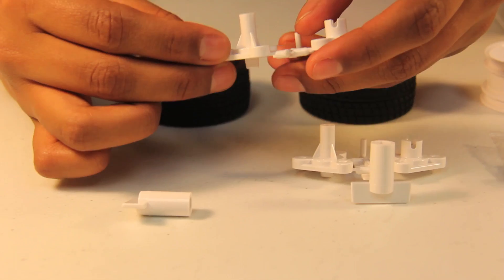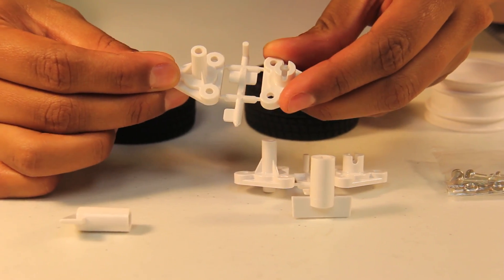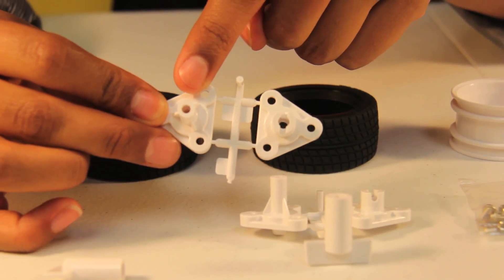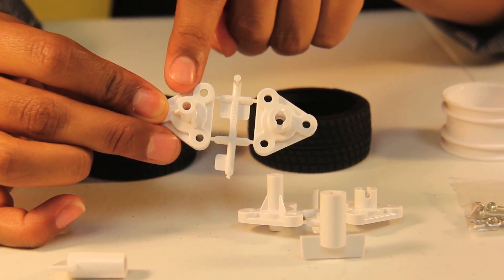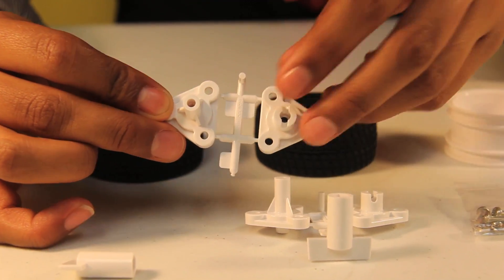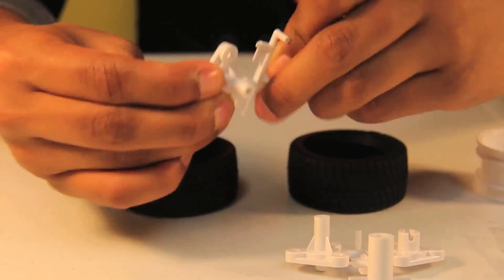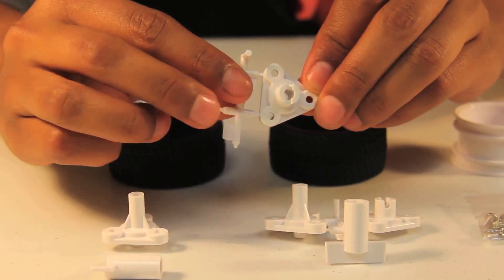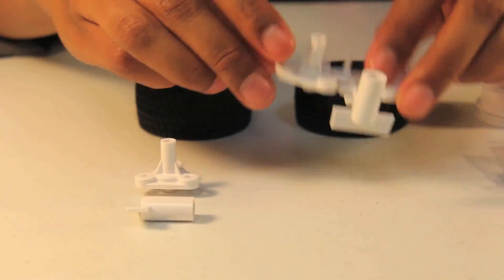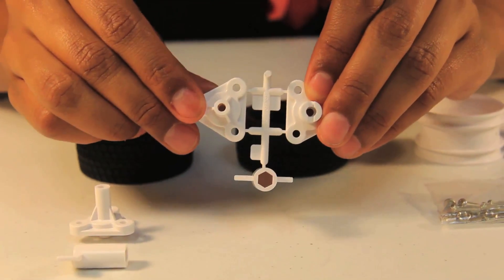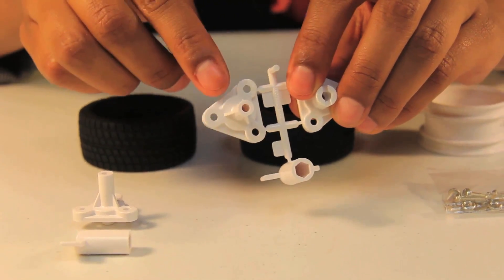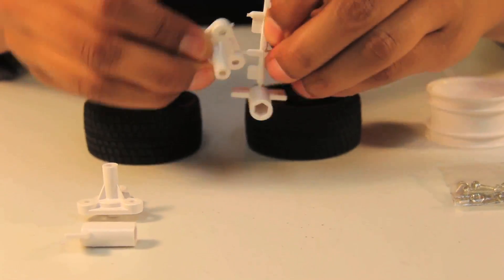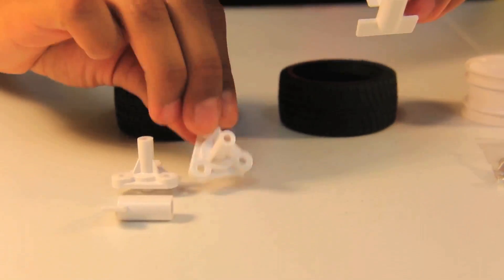We will also be using the wheel hub for the hex shaft. So if you notice, these two wheel hubs look different. We are choosing the one with the longer cylindrical shape. Twist it off. And that's one. I'm going to put this to the side because I don't need it. And I'm also going to take off the second wheel hub for the hex shaft. Again, it's that longer cylindrical shape. And put this to the side.